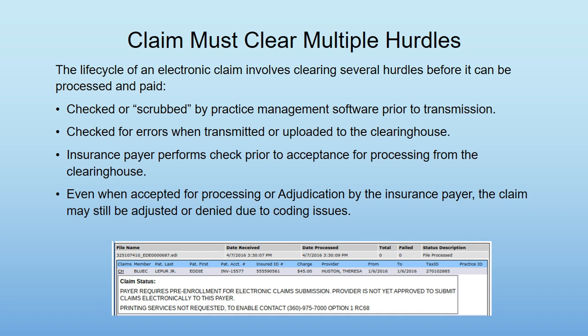When you send an electronic claim, it has to clear multiple hurdles. It has to be checked or scrubbed by the practice management software before being transmitted — some practice management softwares have that capability. It's also checked for errors when you upload it to the clearinghouse. Then once the clearinghouse transmits the claim to the insurance payer, they also go through a process of checking the claim prior to accepting it. Once the payer accepts it, it goes through the adjudication process, and the claim can still be adjusted or denied if it doesn't comply with their guidelines and rules for processing.